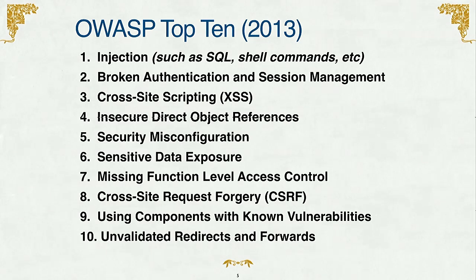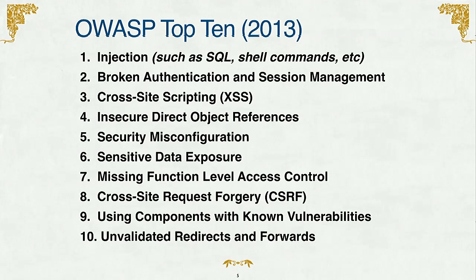Insecure direct object reference sounds obscure, but it's something like if you can just manipulate the URL and put in a node ID and see a node you weren't supposed to have access to. Security misconfiguration is a broad topic — that might be something like misconfiguring your web server so someone can browse uploaded files. Missing function level access control is if you have a controller for a page in your Drupal site and it doesn't have any access checks — you just return true for access.